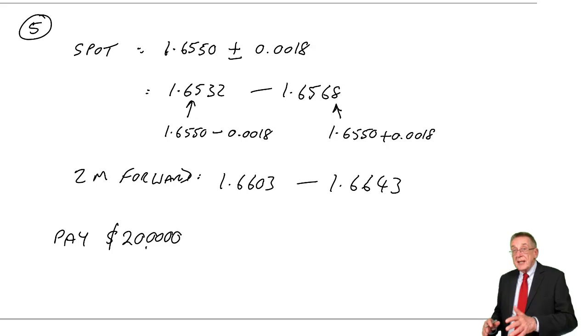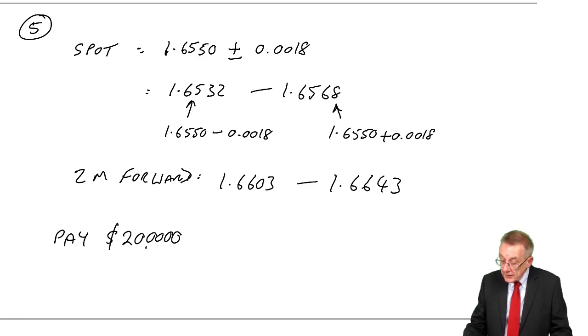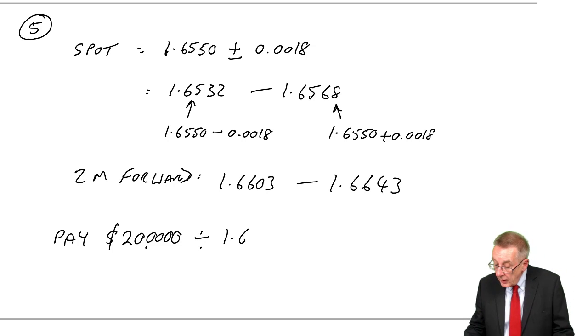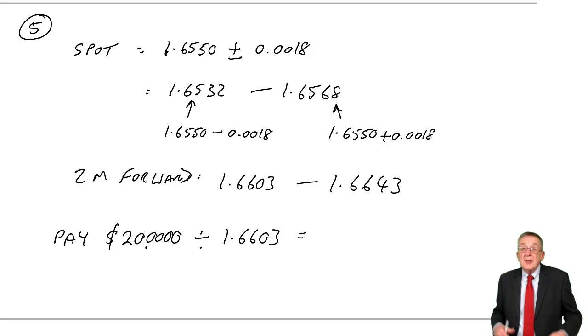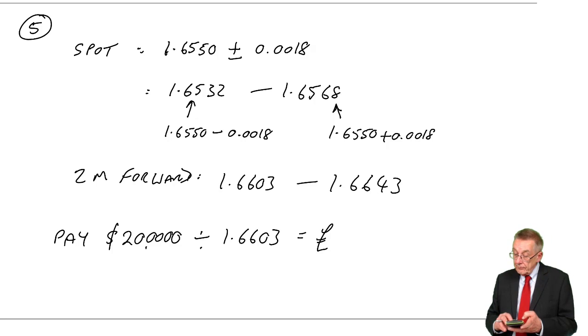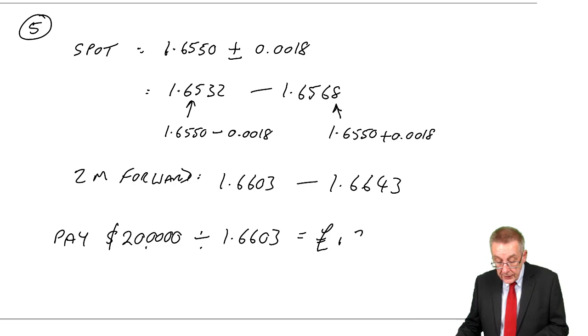It's 1.6 dollars equals a pound, so we'll divide by the relevant rate. And which rate will we use? We're buying dollars, we'll convert at the lower rate, which will give us the biggest cost. And so, the cost in pounds is 120,460.